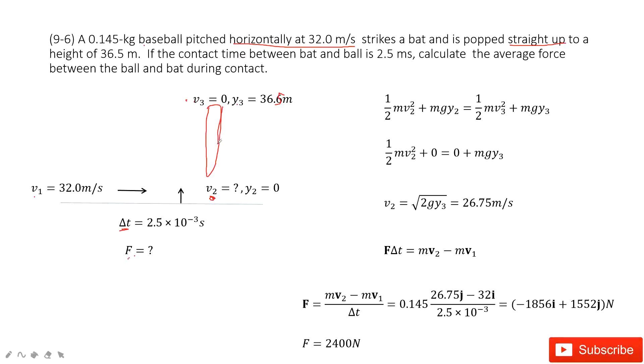So in this part, the energy is conserved from v2 to v3. So we can see the energy at position 2 is kinetic energy plus potential energy, and then we can input the known quantities y2 is zero, v3 is zero. So we can get the v2 very easily.